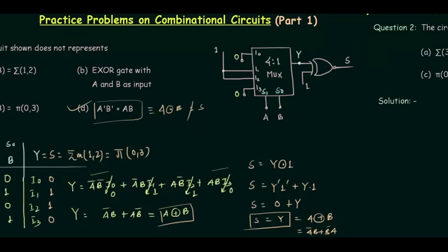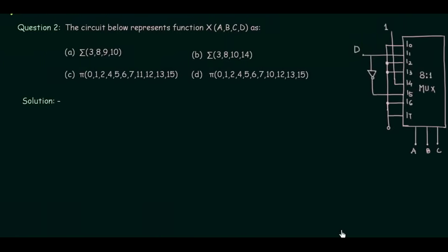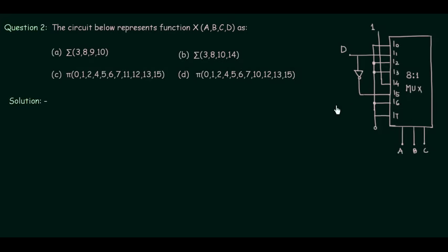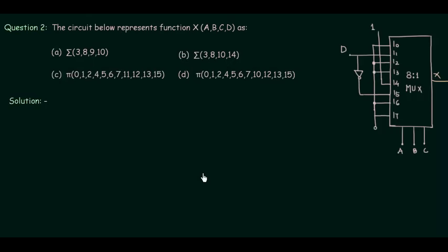Now let's move to example number 2. In this problem there is also a mux involved, and this time it is an 8-to-1 mux. You have to find out the function x. The function x has variables a, b, c as the three selector variables and d as the input.